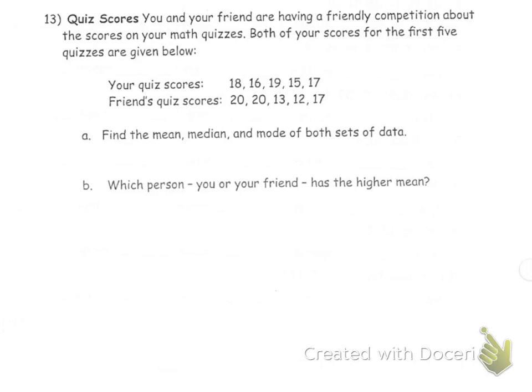So our first and most important thing is to order these numbers from least to greatest. So for our first person, which is you, your scores are 15, 16, 17, 18, 19.